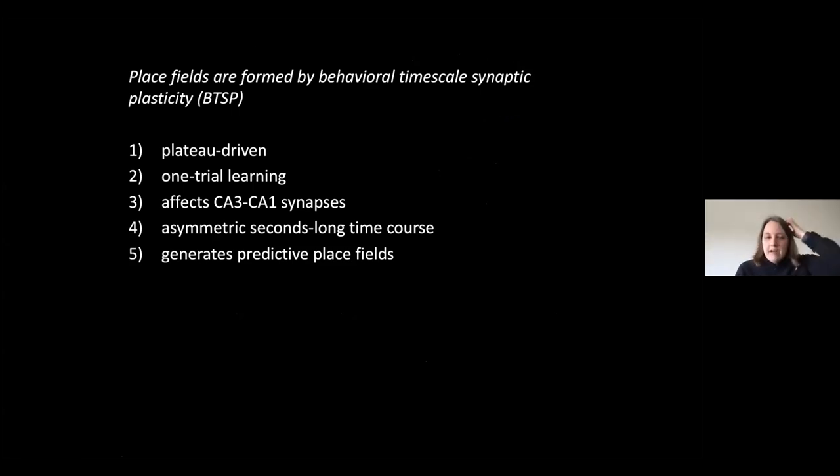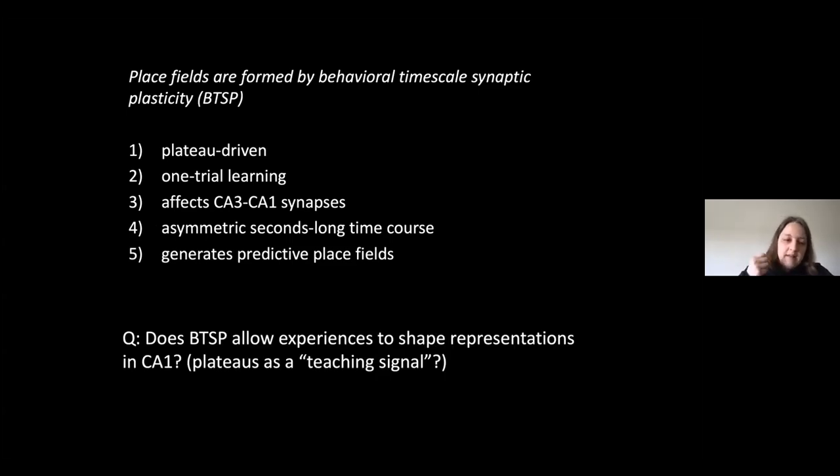In the final part, I want to talk briefly about some unpublished work. Based on these features, BTSP is really a mechanism that could allow neurons to store an association between an event and the delayed outcome, let's say a reward, and that outcome can be delayed by up to a few seconds. Because of this unique ability, then my idea was: could BTSP be the mechanism that allows for this reward over-representation to form, allow for this experience dependent shaping of the CA1 population activity? The last question I'm going to talk to you about today is: does BTSP allow experiences to shape CA1 representations? The plateau could be seen as a kind of teaching signal, saying something significant has happened, now form a place field here. To answer that question, I turned to two-photon calcium imaging of CA1 representations.